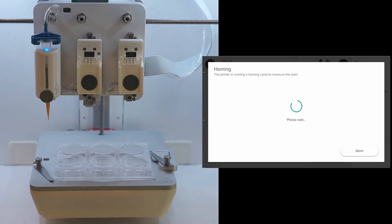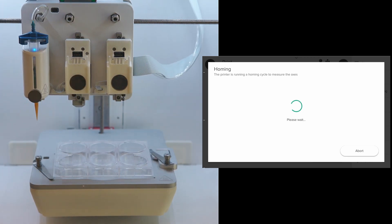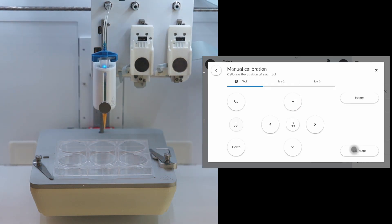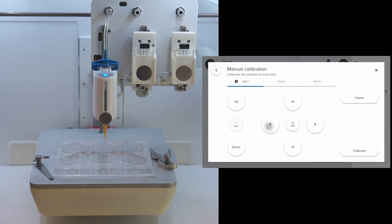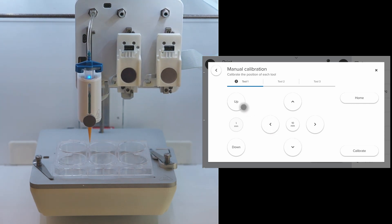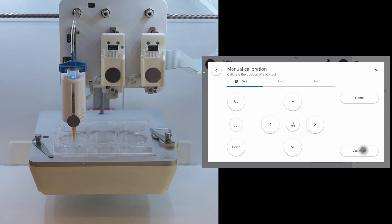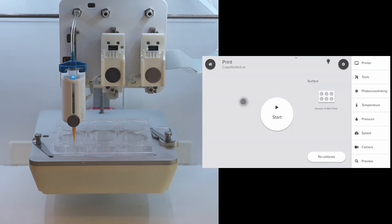A homing cycle is performed to measure the axes. Using these controls for manual calibration, we move the tip of the needle into the first well. Remember, the printhead moves along X and Y axis and the print bed moves along Z axis. When we click up, the print bed moves up. So make sure we have our step size appropriate. Once we find the calibration appropriate, click on calibrate and click start.